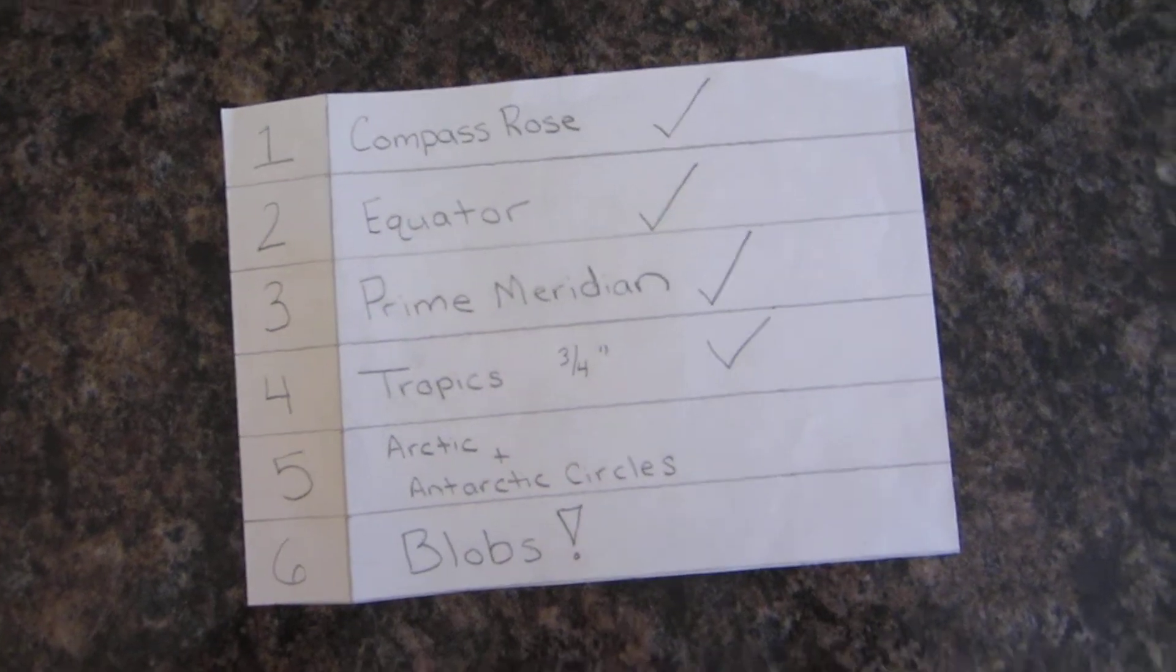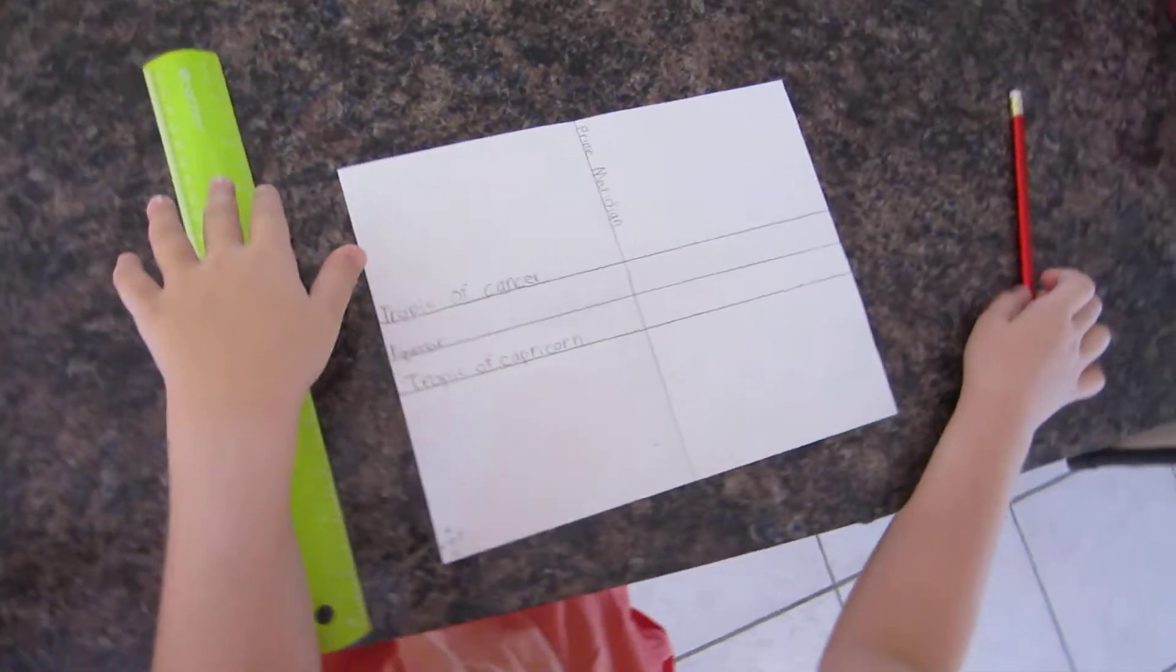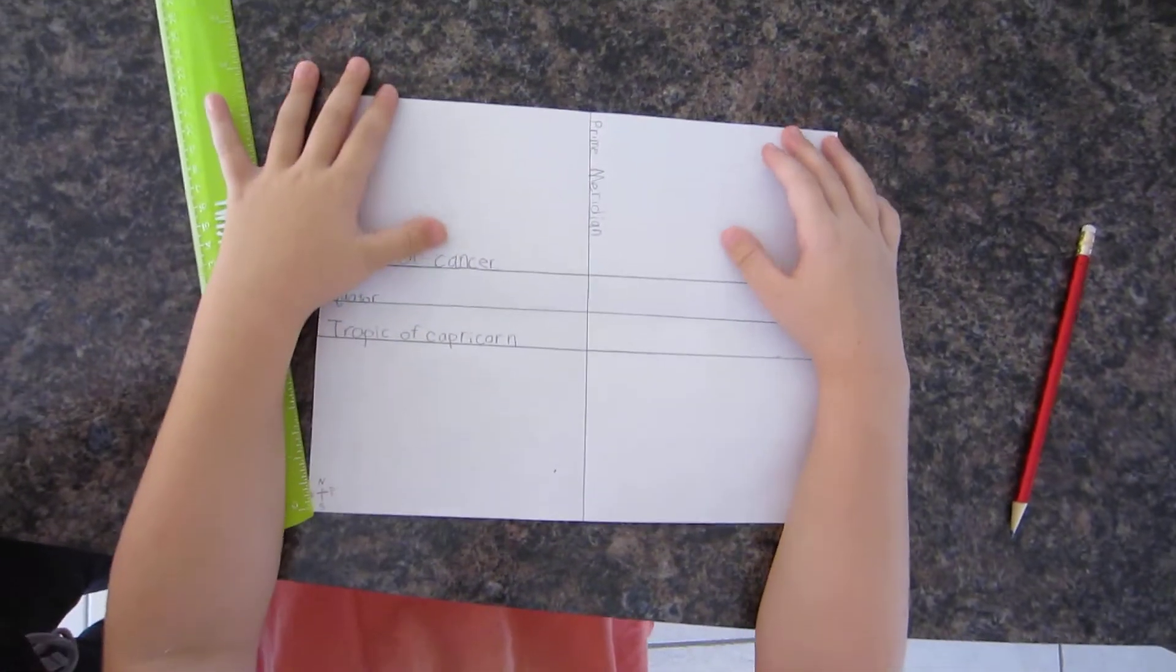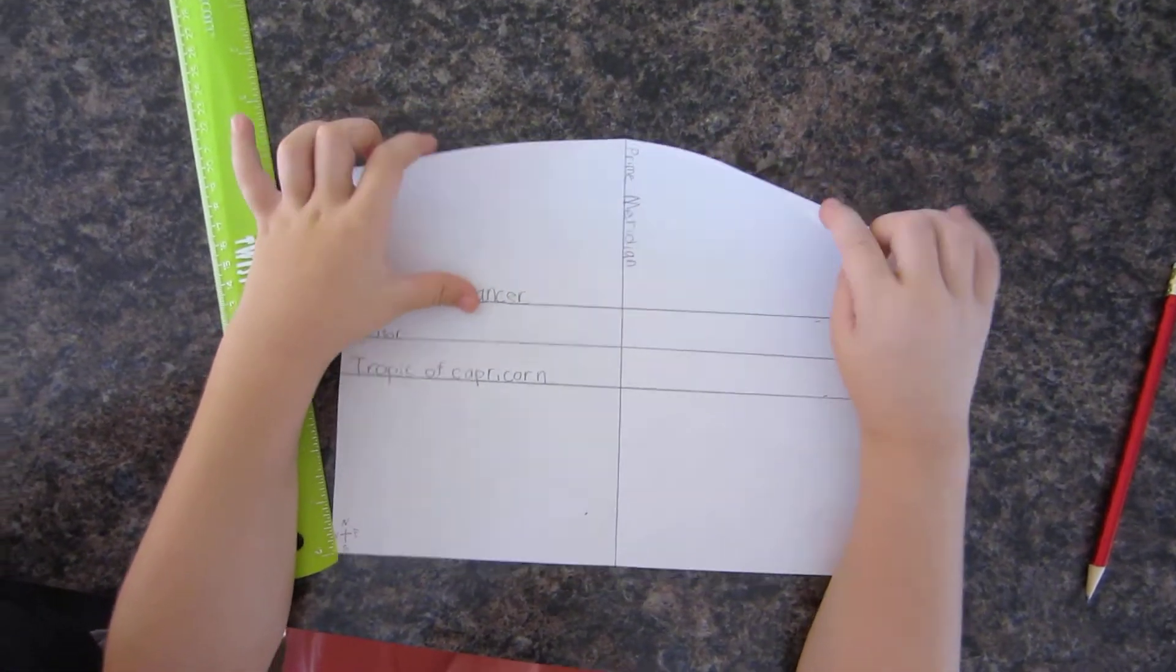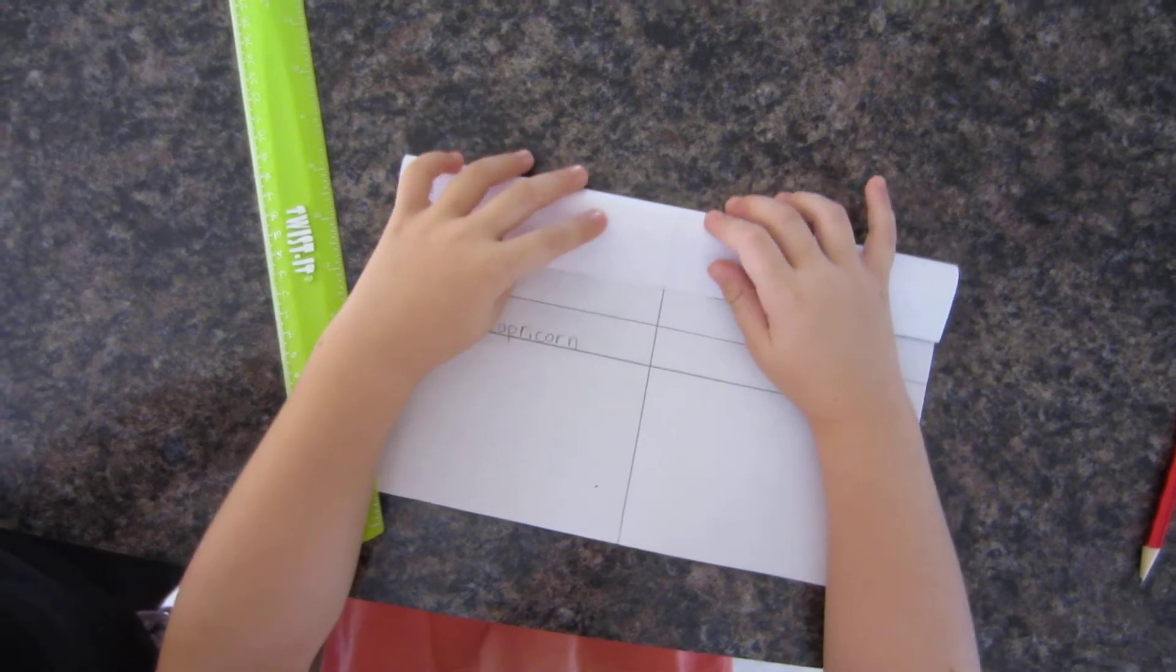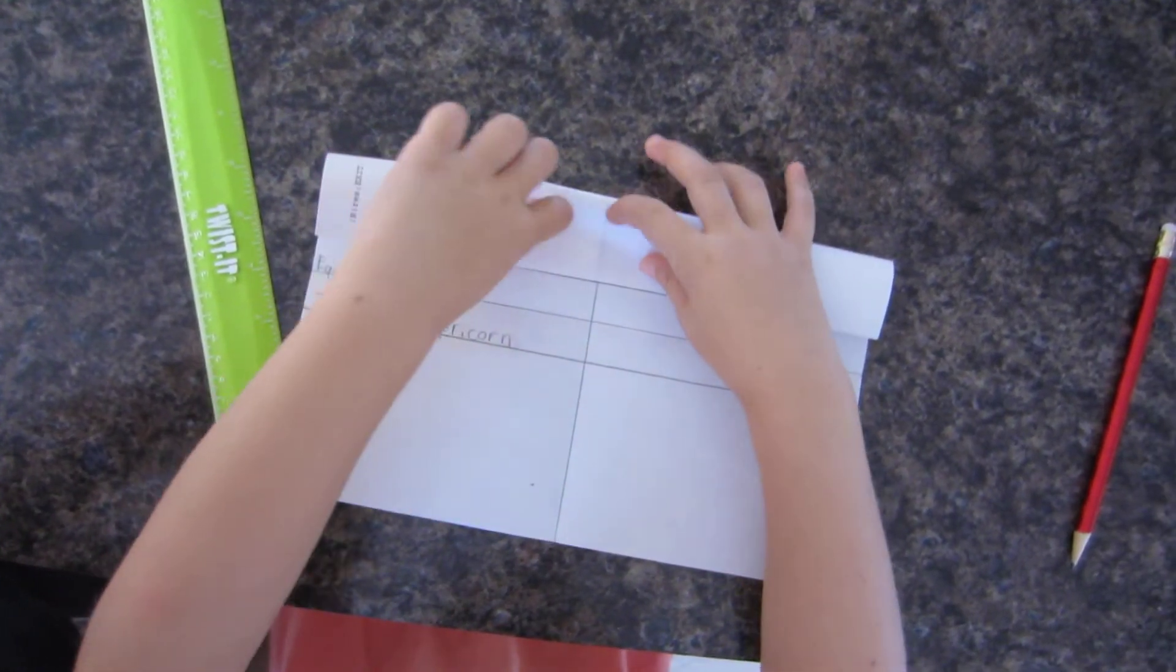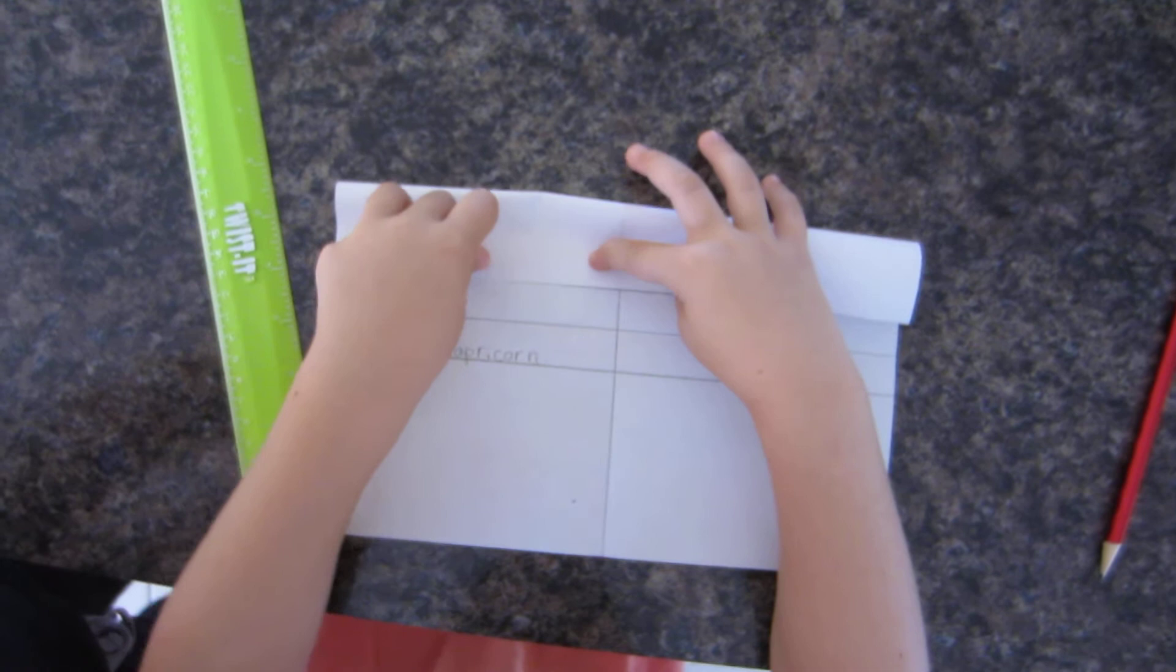Okay, now we did our tropic lines and we're going to do the Arctic and Antarctic circles. Can you show me the trick for getting those lines? Explain what you're doing. Take it and fold it right on the Tropic of Cancer.